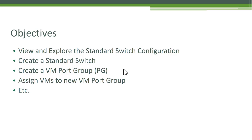We'll view and explore the standard vSwitch configuration, then create a new standard switch. We'll see how to create a new virtual machine port group, and then we'll take some of the VMs created in previous labs and move those VMs from the existing standard switch to this newly created VM port group on our new standard switch.